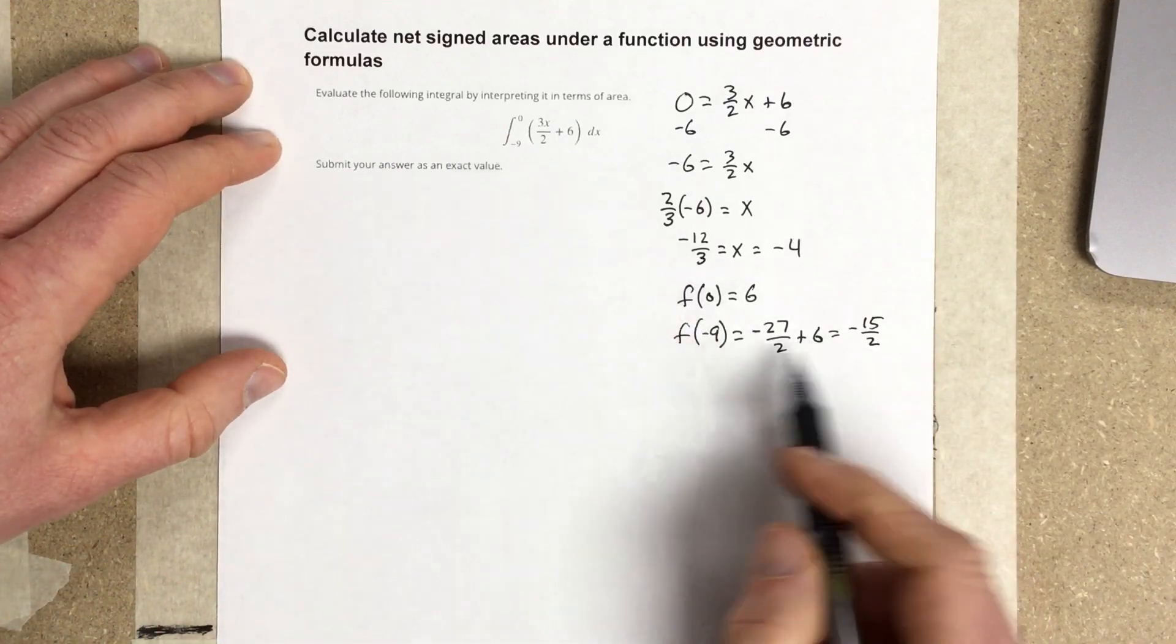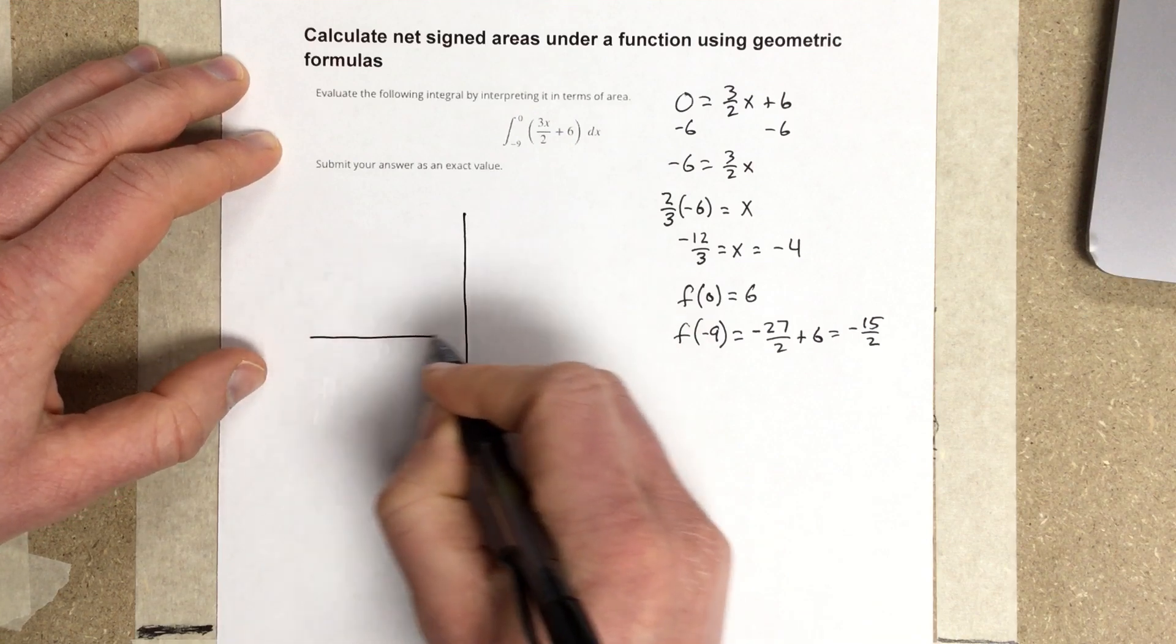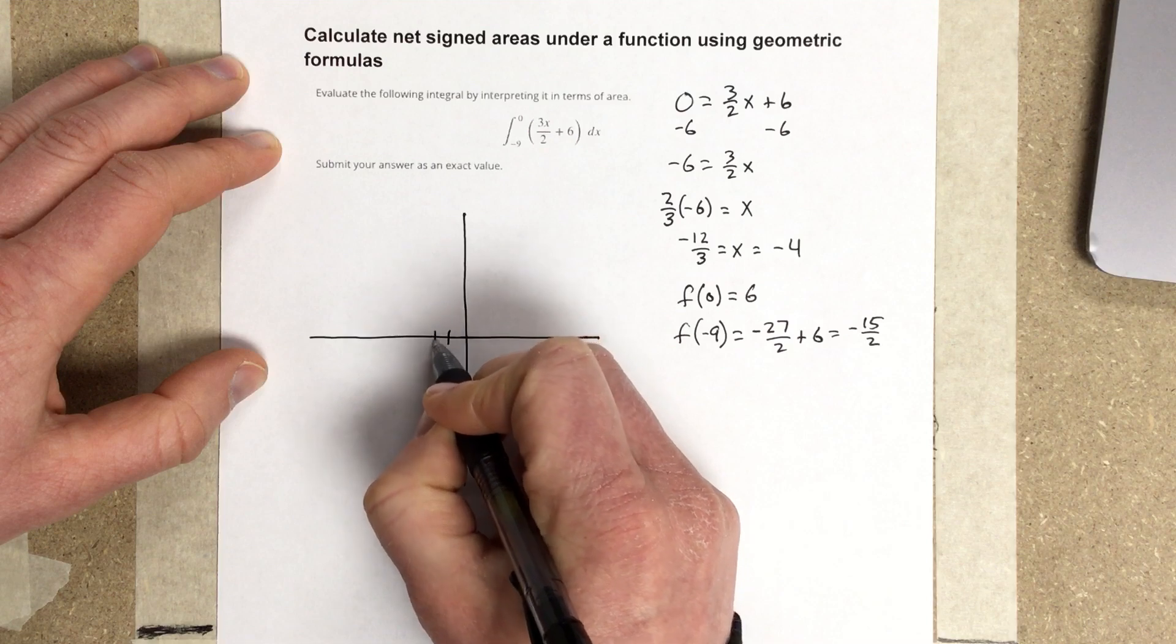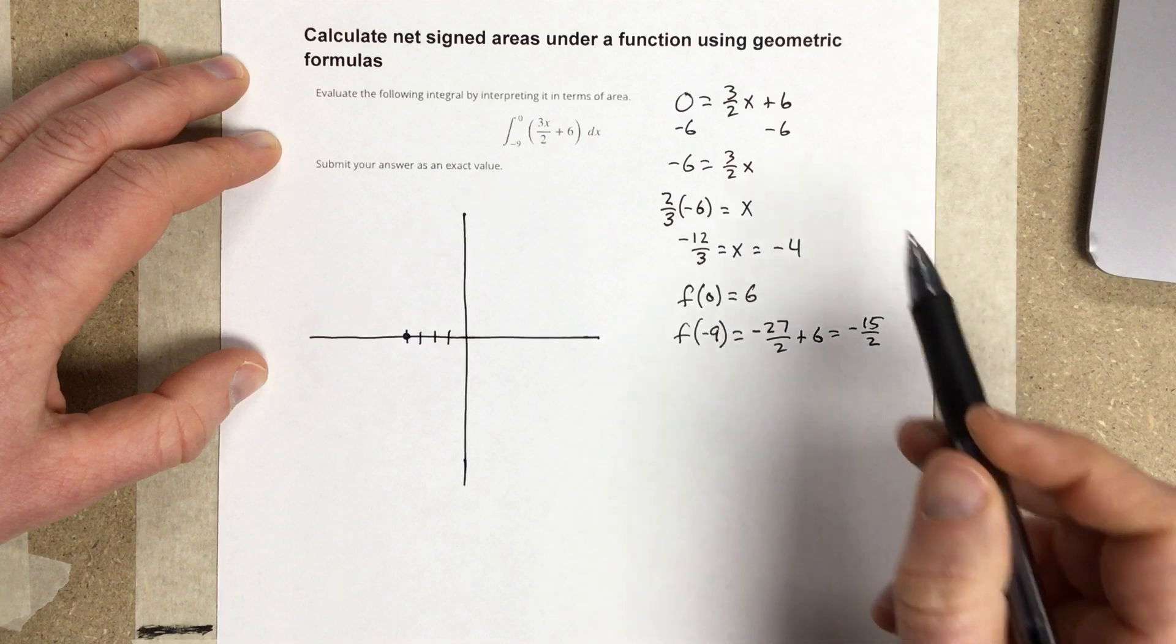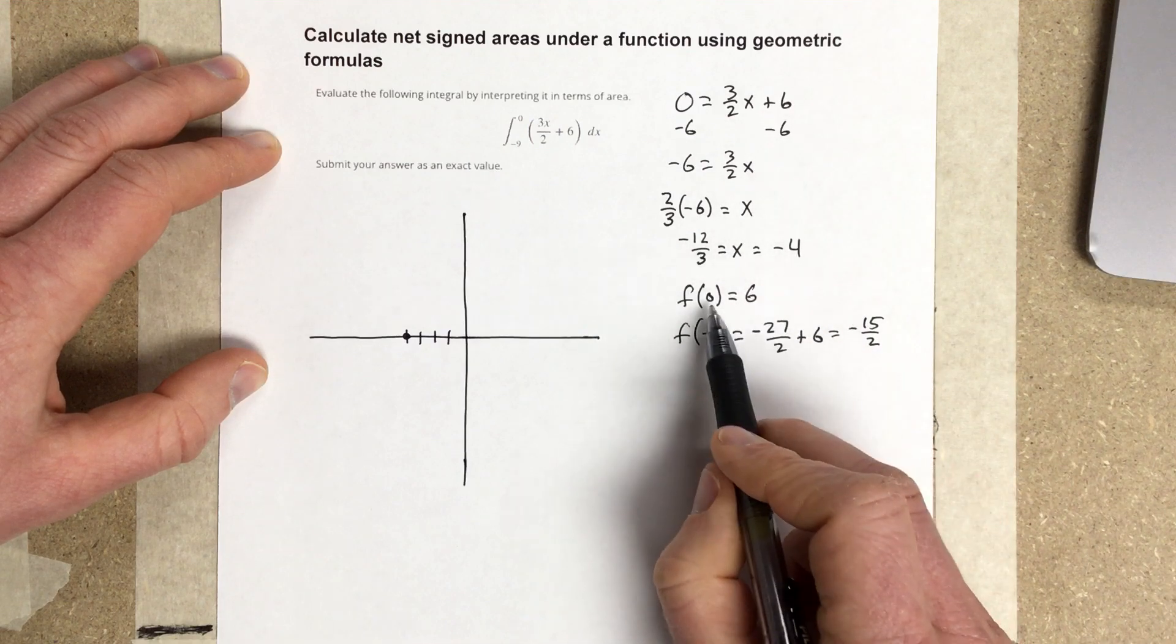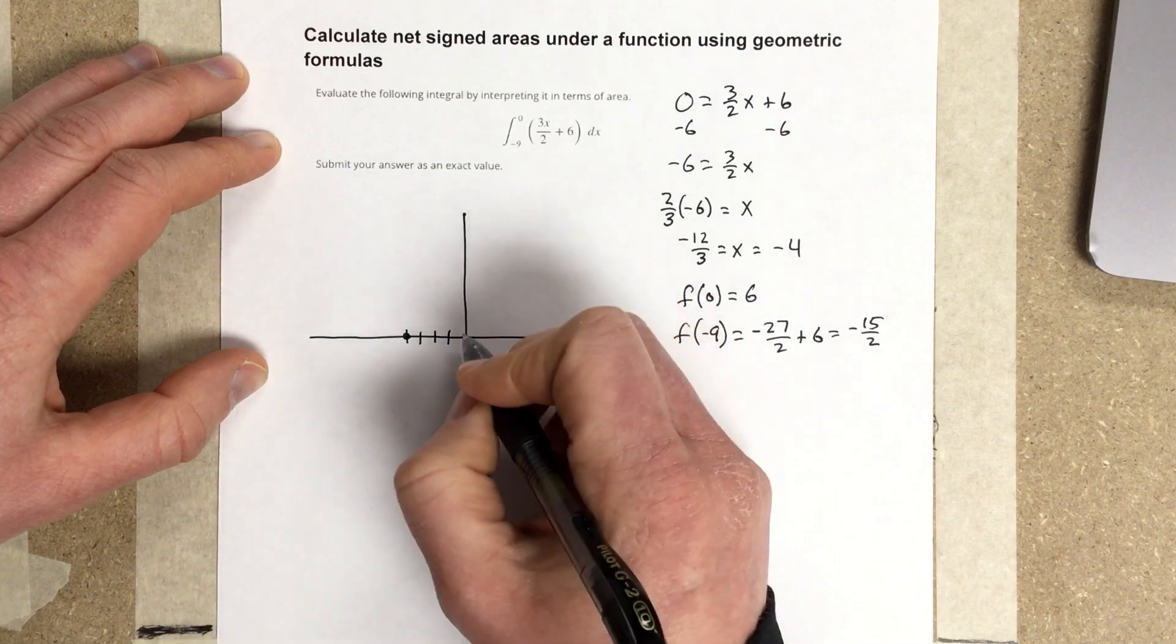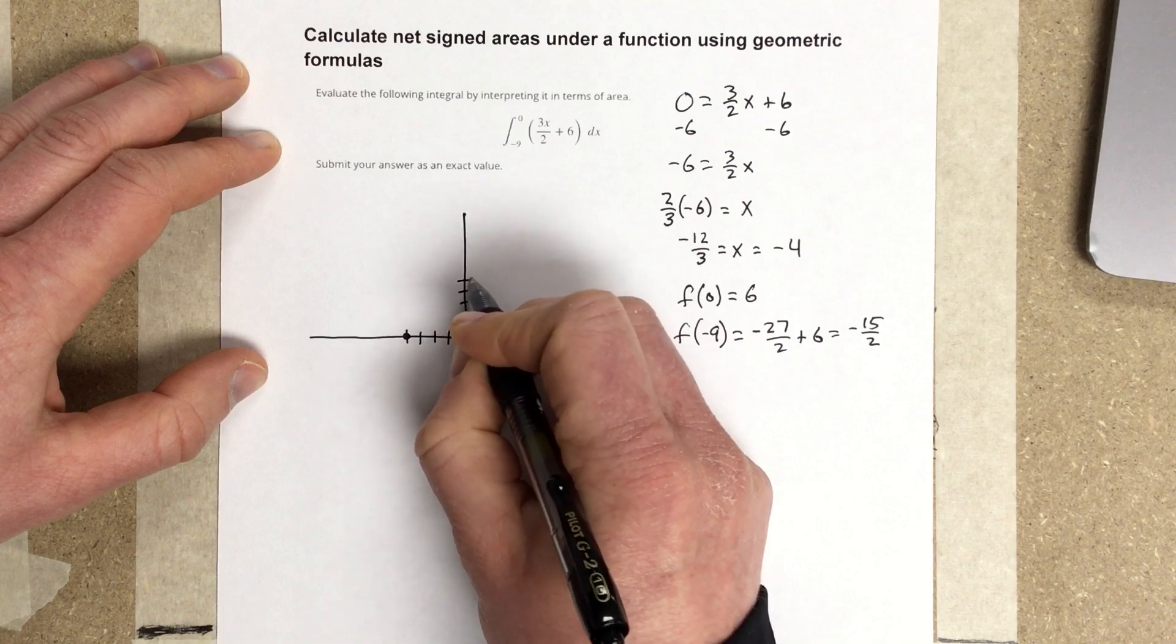So what I'm going to do is I'm going to graph this now. Now, my x-intercept is negative 4, 0. I've got a coordinate that is 0, 6. So I'm going to go up to 0, 6.